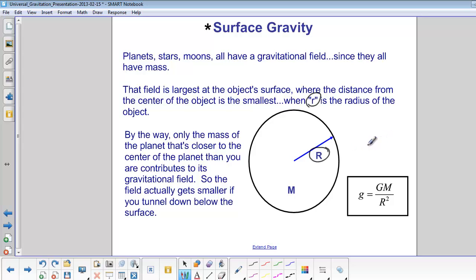By the way, only the mass of the planet that's closer to the center of the planet than you contributes to the gravitational field. So that means if you try to tunnel into the Earth below the surface, the gravitational field actually gets smaller.